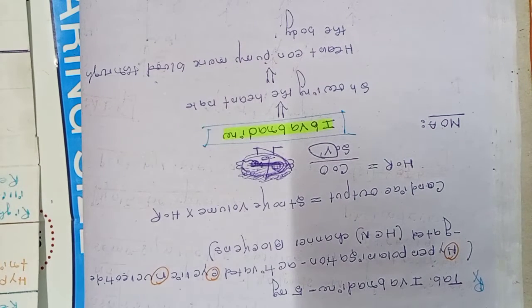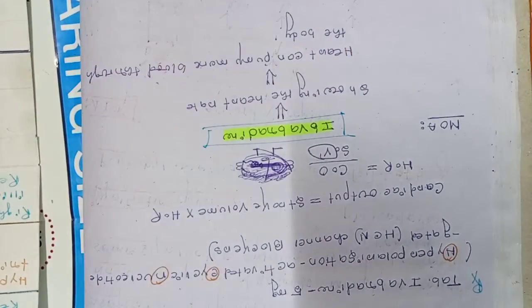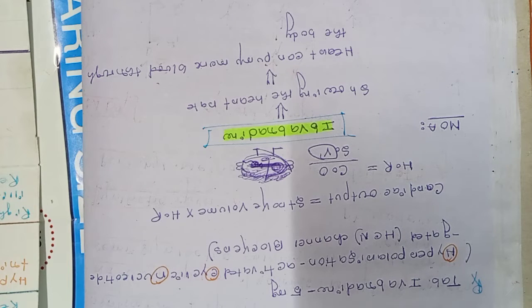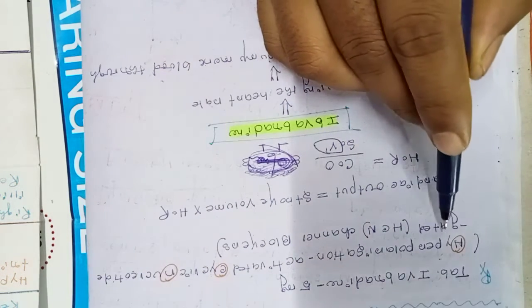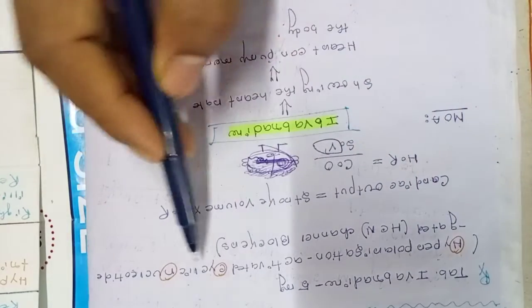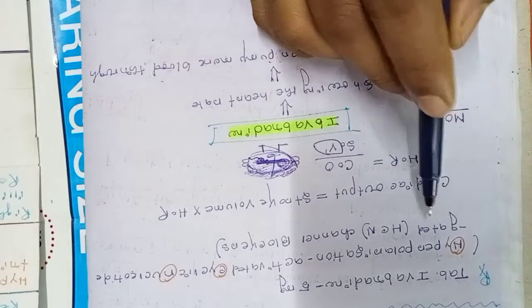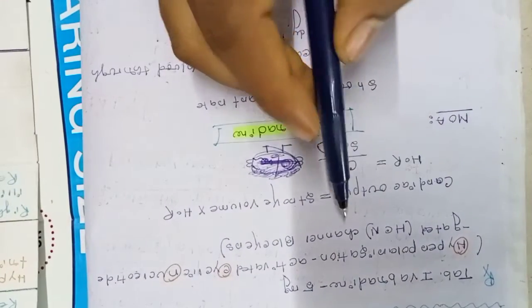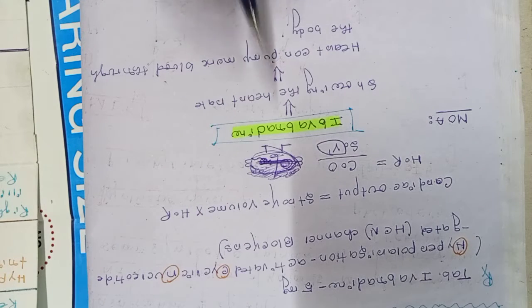Hello friend, today we'll talk about one tablet that is IVA-Bradyne 5mg. This tablet is mainly used for cardiology. This drug is a hyperpolarization activated cyclic nucleotide gated channel blocker that is mainly used for cardiac problems.